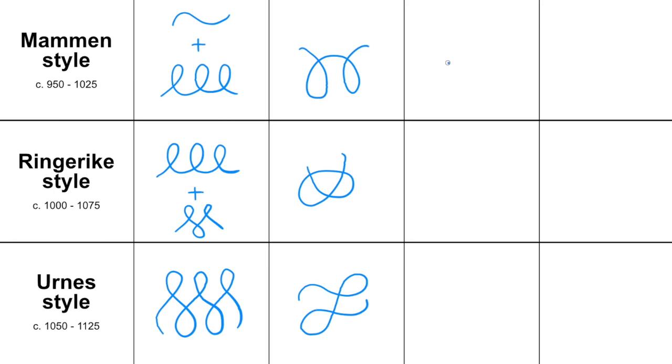In application this looks for the Mammen style something like this with curly loops and a separate loop, curly loops. And in the Urnes style we have a series of loops sometimes intersecting.